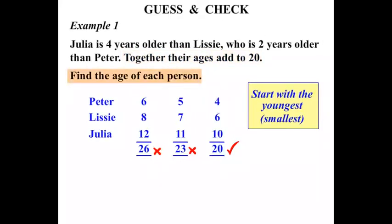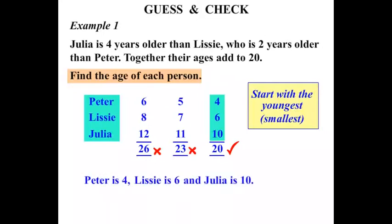So, find the age of each person. Make sure that's all our working done. Make sure we write our answer in sentence form. Peter is 4, Lissy is 6, and Julia is 10. So a nice clear answer there at the end of our working. Terrific.